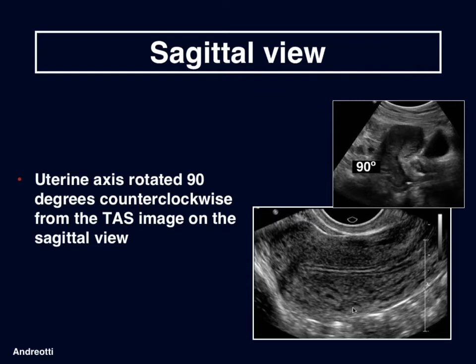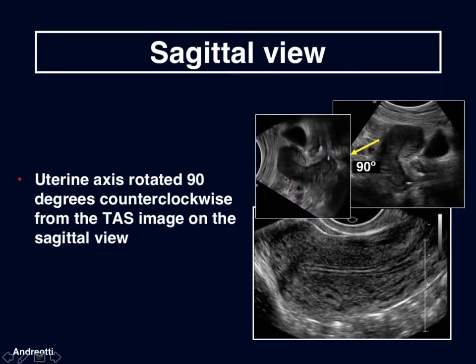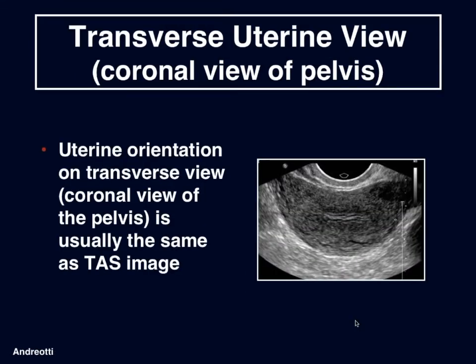How is the transvaginal image seen with respect to the transabdominal image? The uterine axis is rotated 90 degrees counterclockwise from the transabdominal image on the sagittal view. But the uterine orientation on the transverse view, which is the coronal view of the pelvis, is usually the same as the transabdominal image.